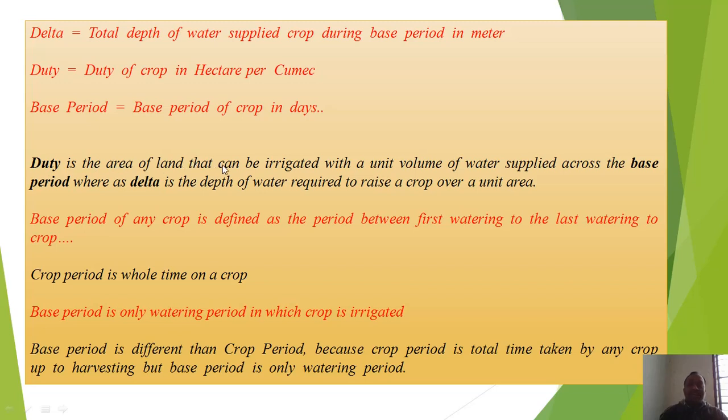Duty is the area of land that can be irrigated with a unit volume of water supplied across the base period, whereas delta is the depth of water required to raise a crop over a unit area.